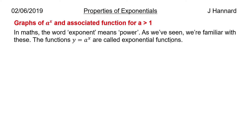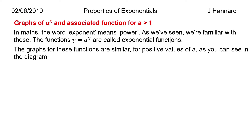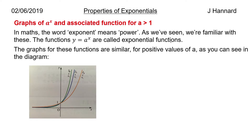Graphs of a to the x and associated functions for a greater than 1. In maths the word exponent means power, as we've seen. The functions y equals a to the x are called exponential functions. The graphs for these functions are similar for positive values of a, as you can see in the diagram. As a increases, the line gets steeper and steeper and tends towards infinity.